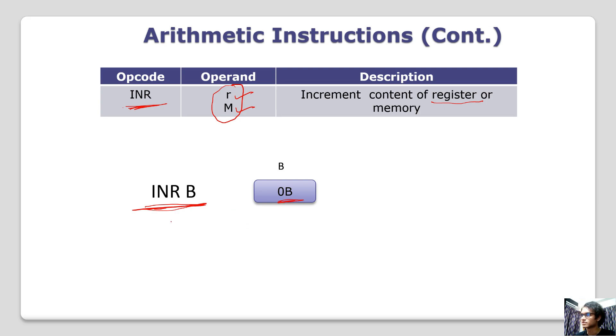So, what is the value of the result? 0B is the input value. After increment, 0C is the result value.